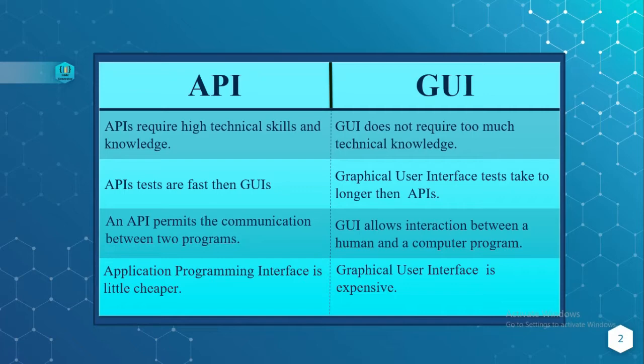APIs test faster than GUI, so the testing will be done quickly in APIs. Whereas Graphical User Interface testing takes time and it is time consuming.